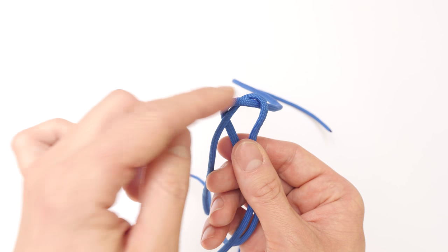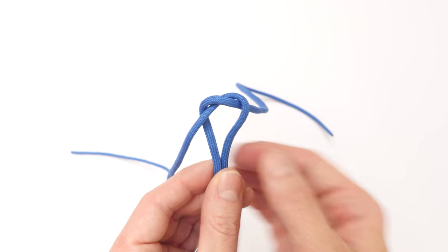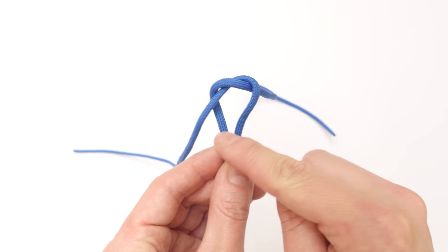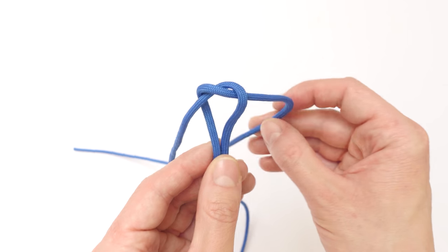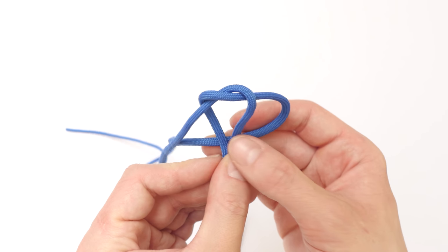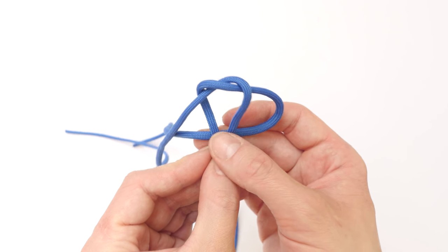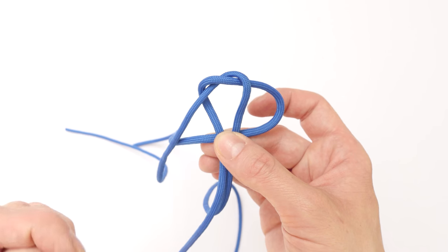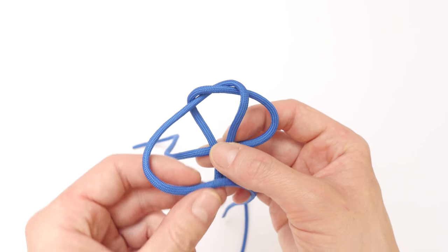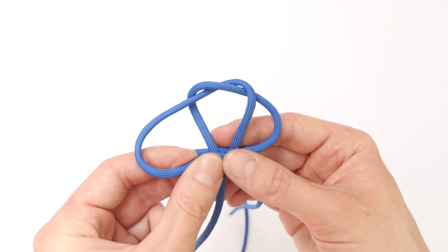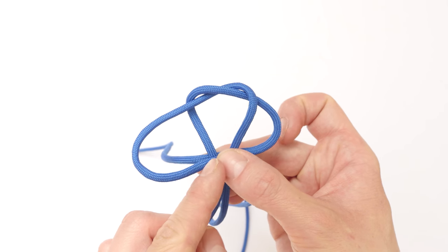This creates a crown knot, and we now pick up our right end and go under the two middle cords, grip it firmly here at the bottom, then pick up your left end and go over the two middle cords. Again, grip it here at the bottom.